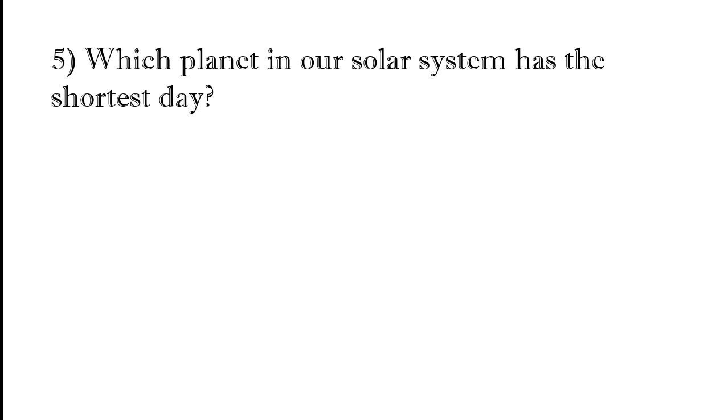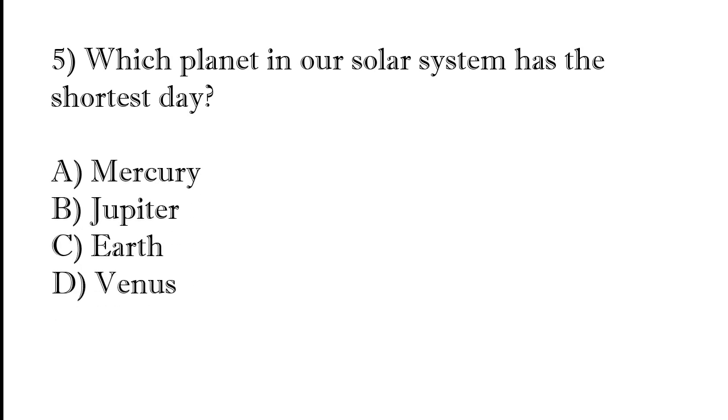Which planet in our solar system has the shortest day? Mercury, Jupiter, Earth, or Venus. The correct answer is option B, Jupiter.